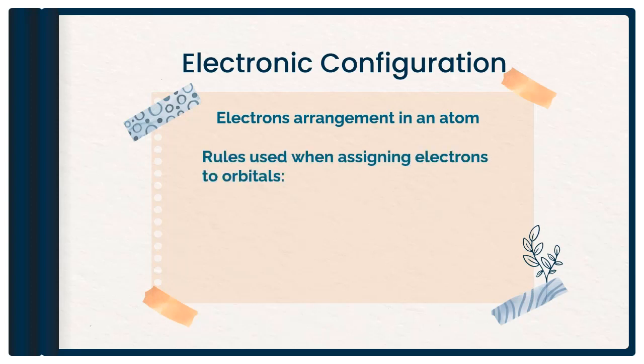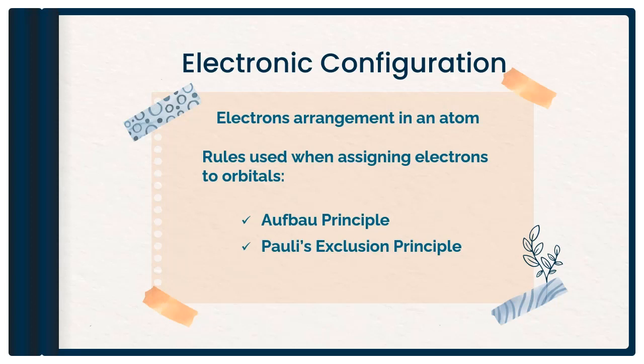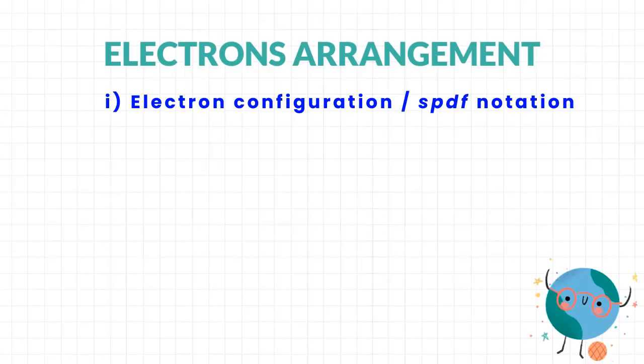We are going to use all three rules in determining the electron configurations of an atom. They are the Aufbau Principle, Pauli Exclusion Principle, and the last one is Hund's Rule. Before we apply the rules, we need to first know how this electron arrangement looks like.